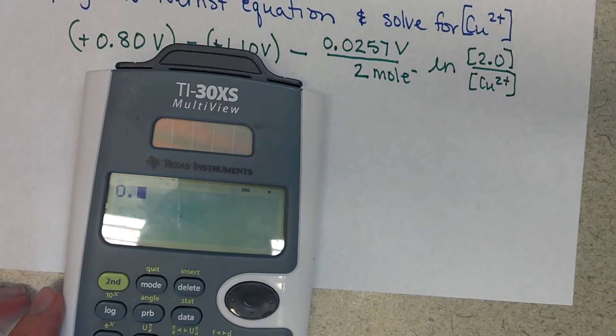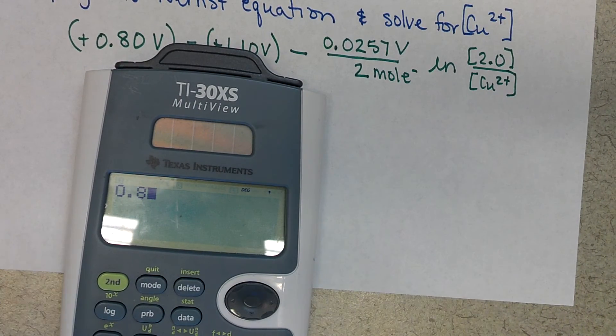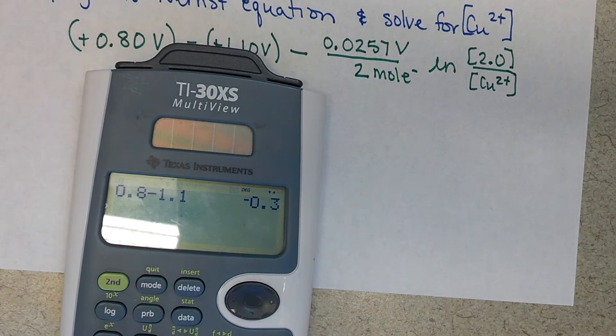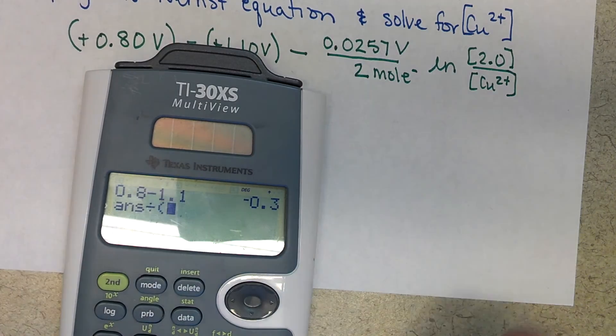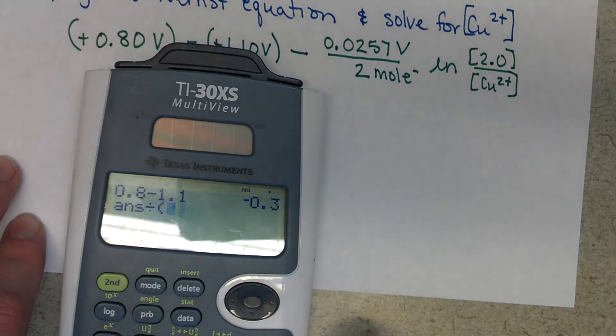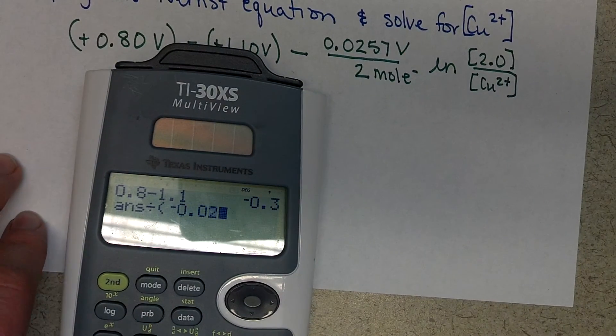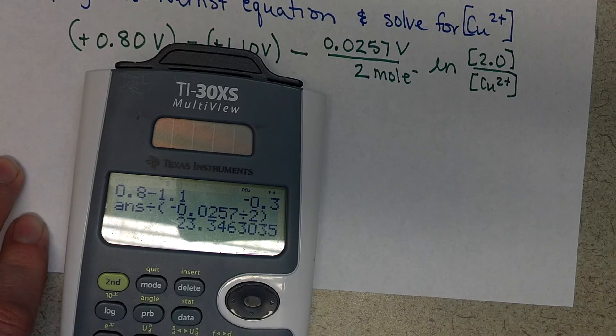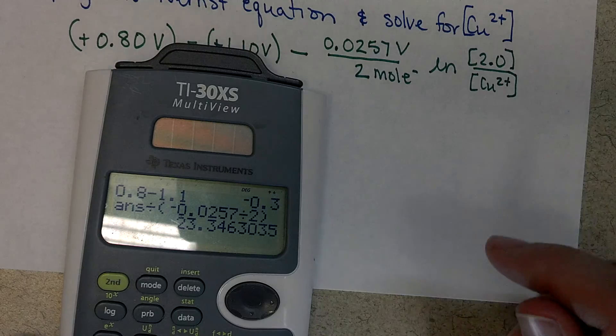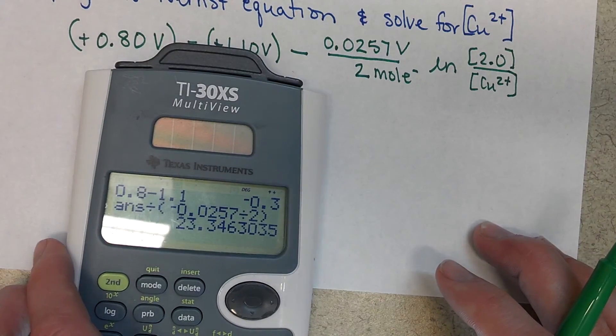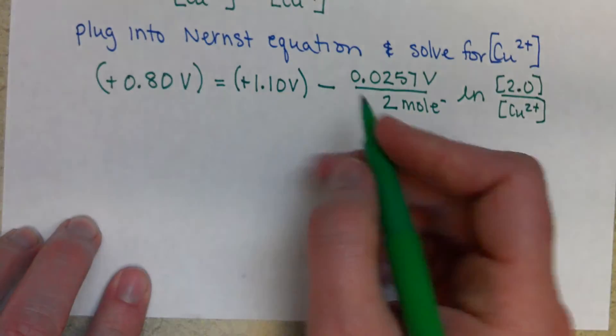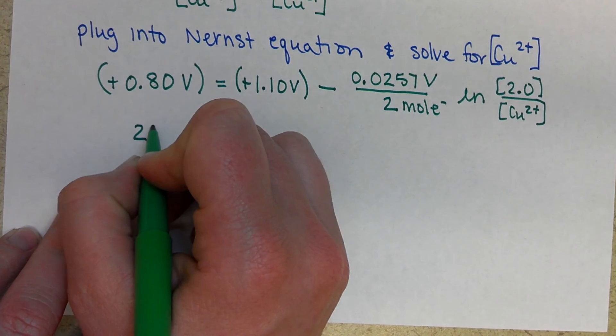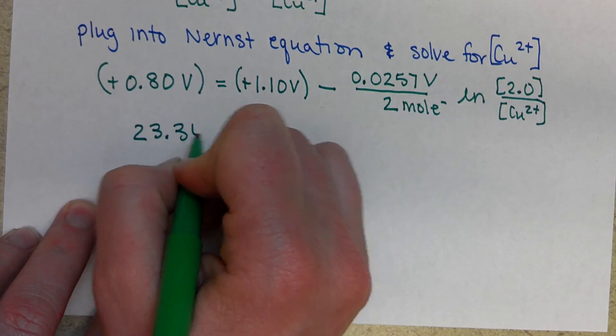0.8, I'm going to subtract 1.1, and divide by my negative 0.0257 divided by two moles, and I have 23.3463035. So 23.346.